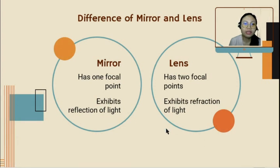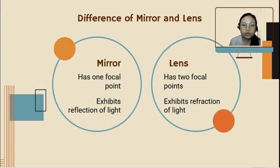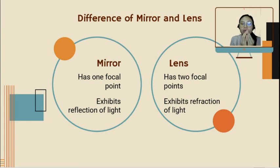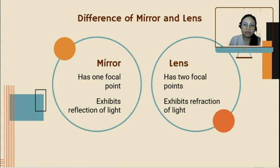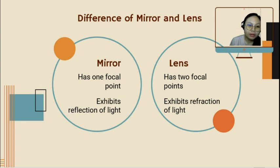Now let's look at the differences between a mirror and a lens. A mirror has one focal point, while a lens has two focal points — one on either side. Light can pass through either side of a lens. With a mirror, light does not pass through — it bounces back, it reflects. So a mirror exhibits reflection, and a lens exhibits refraction of light.